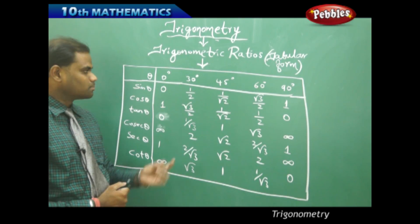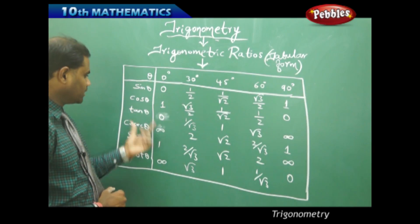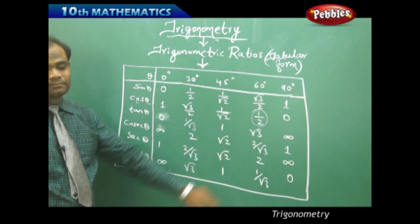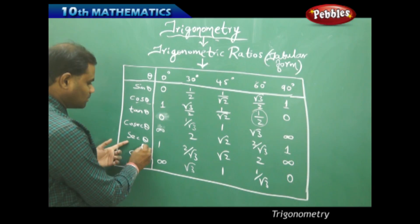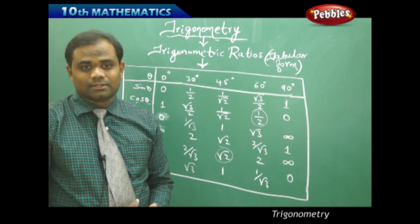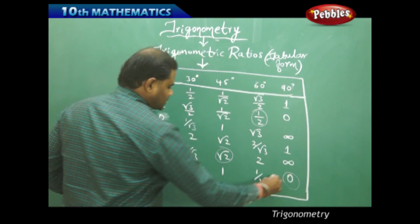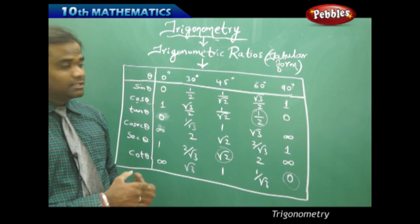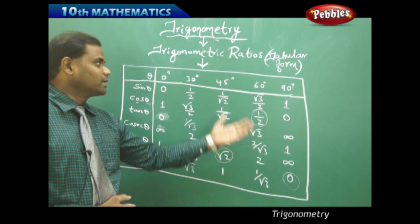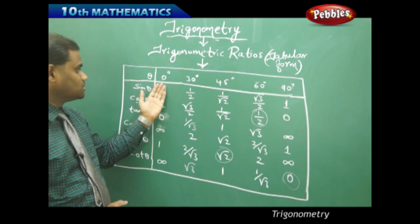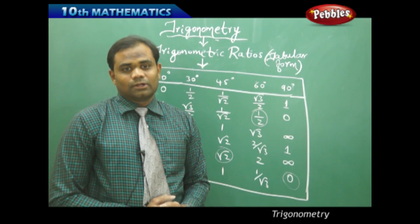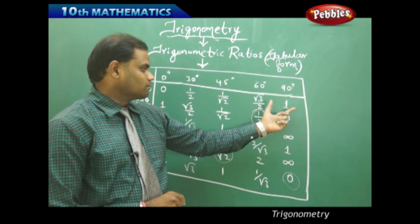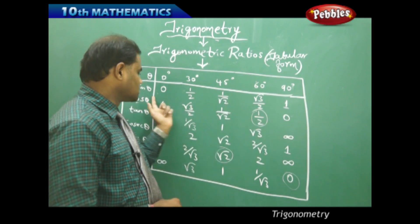These are the six trigonometric ratios for the special angles 0, 30, 45, 60, and 90. For example, to find cos 60, go to the cos column and the 60 column: cos 60 = 1/2. To find sec 45, go to the secant column and 45: sec 45 = √2. Cot 90 = 0. Students can memorize this table using various shortcut methods — the reciprocal ratios are the reverses of sin, cos, and tan.